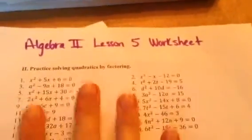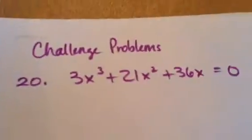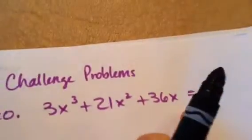Okay, I'm going to do just a few more examples from this worksheet, some of these challenge problems. So let's look at number 20 and 23. So here we go. Notice it's already set equal to zero.